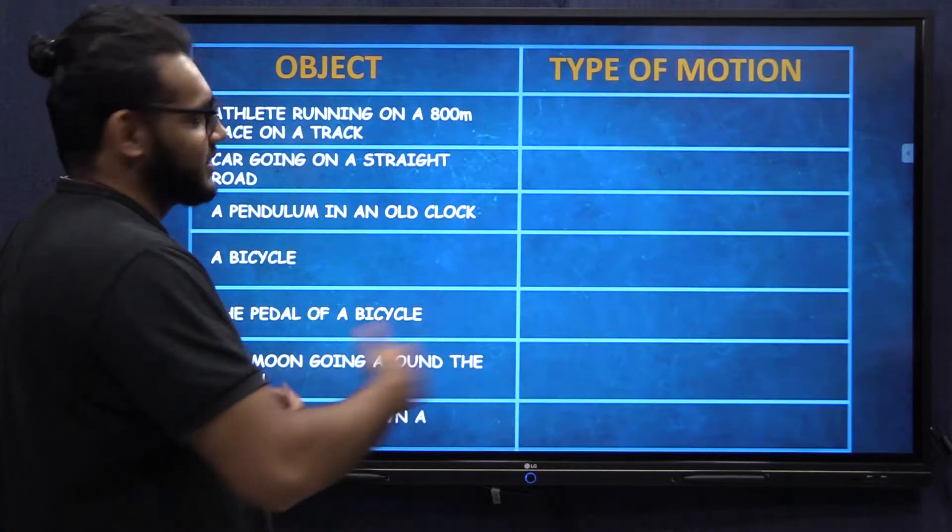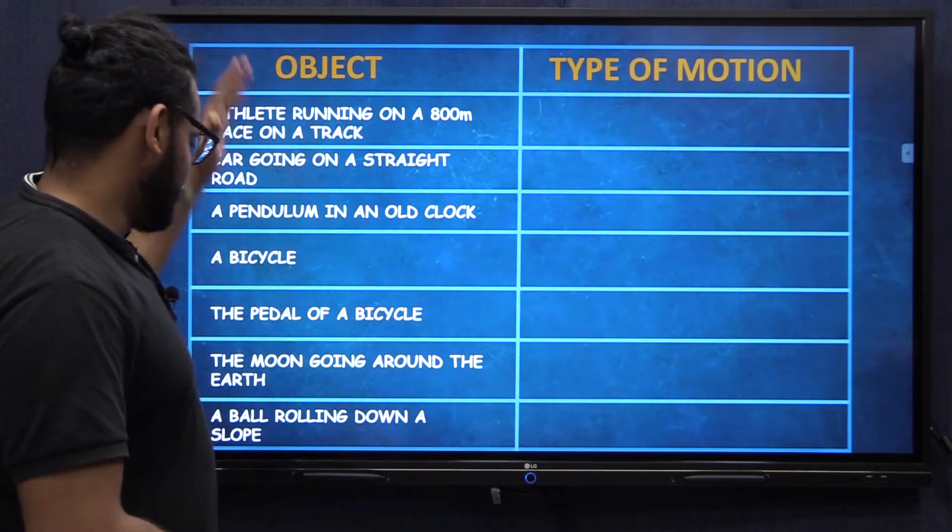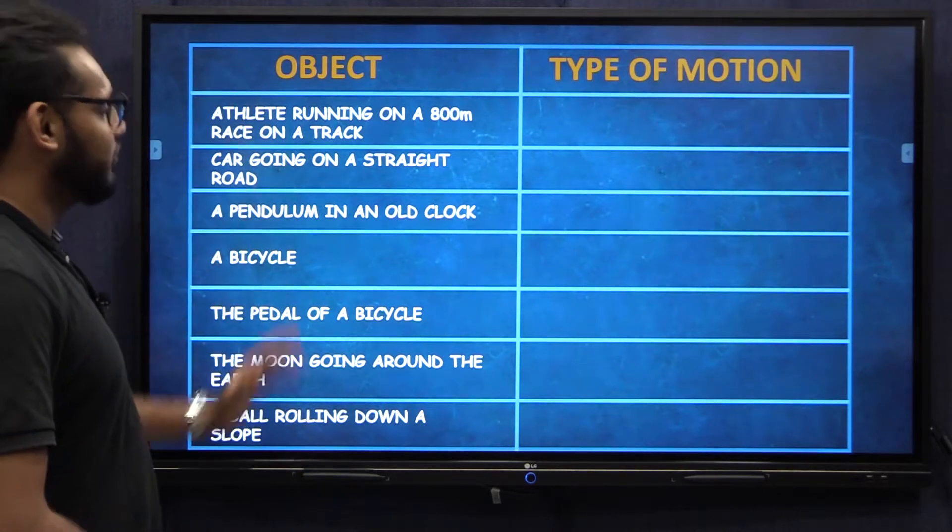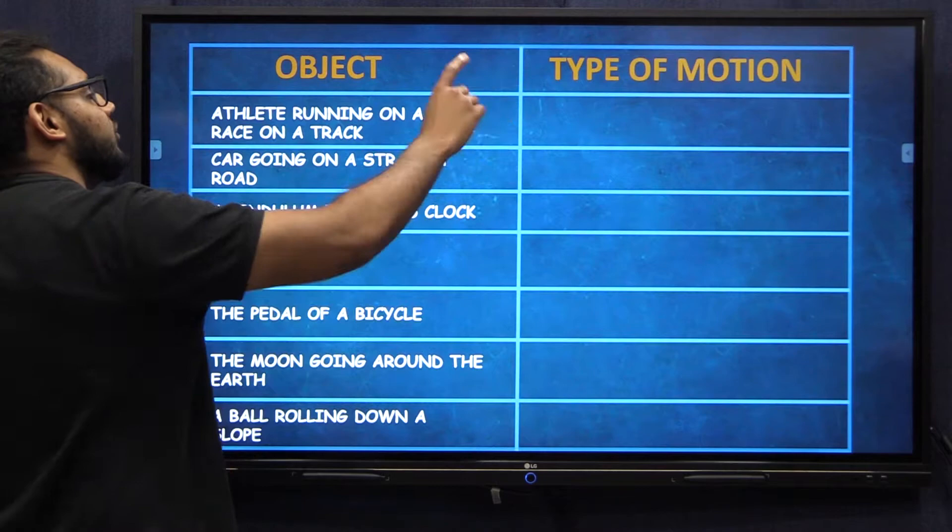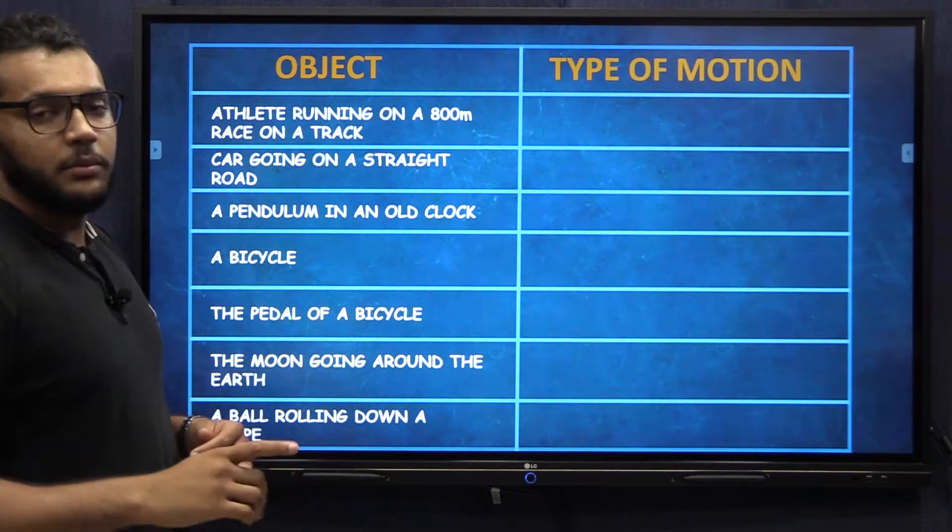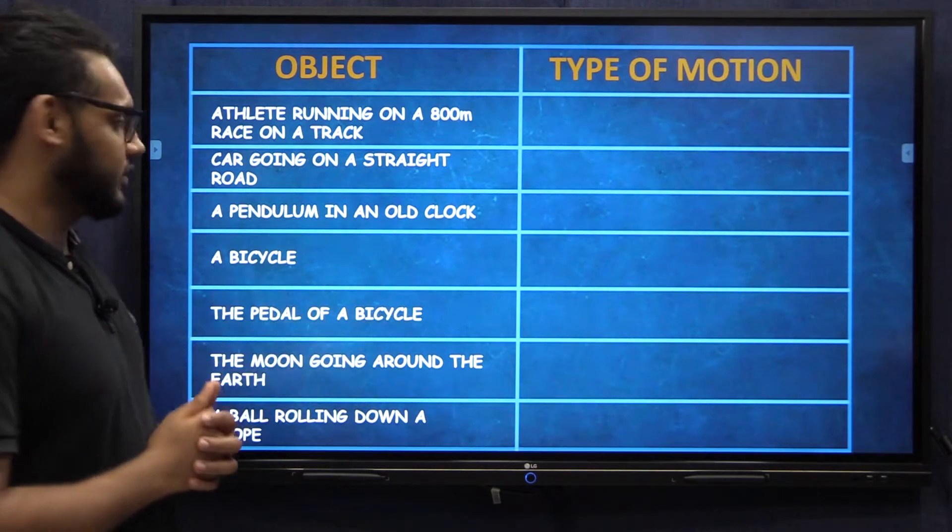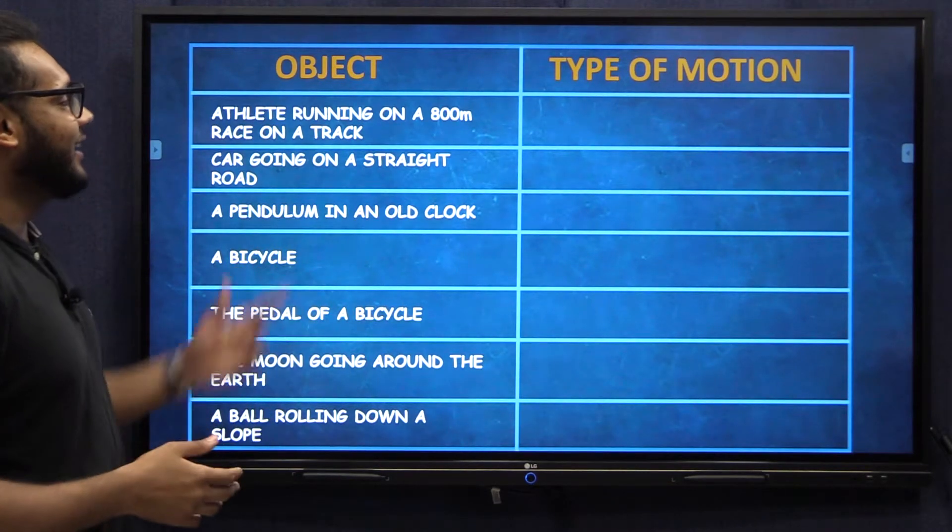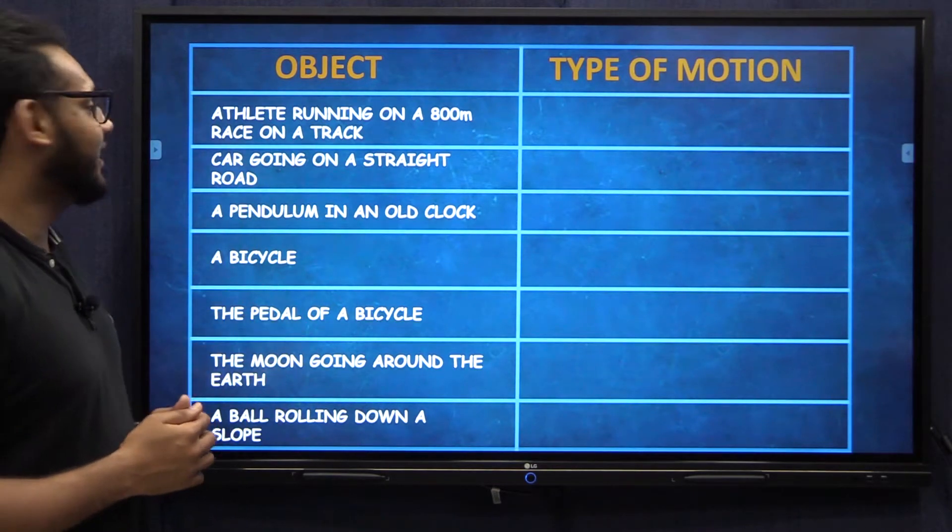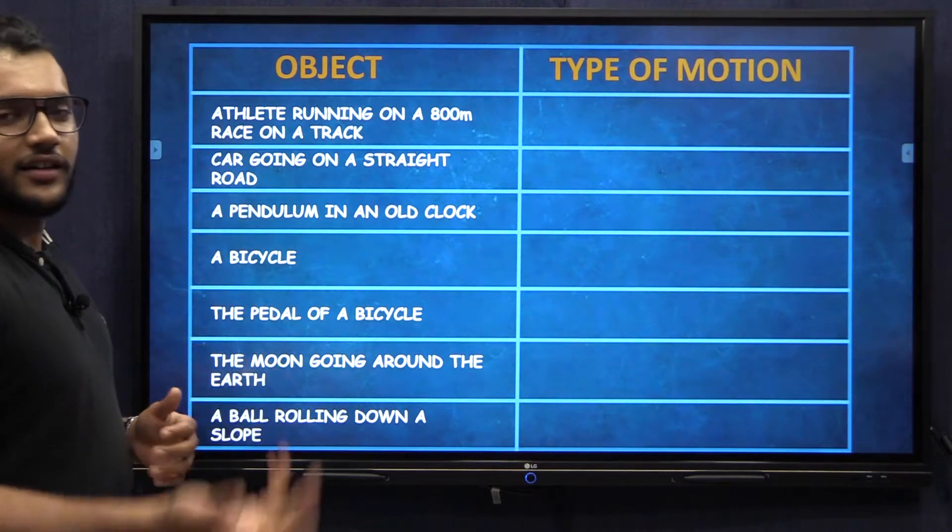Now before we go into today's discussion, I want you to look at this table and look at the different things that are mentioned on the left. I want you to tell me what type of motion this is. Now do remember something can be more than just one type of motion. Take a look and tell me the answer for these questions. First one, an athlete running on 800 meter racetrack.